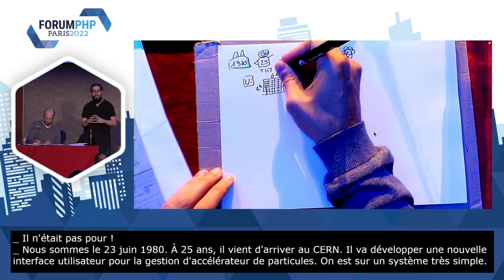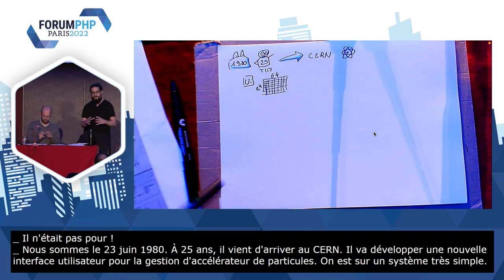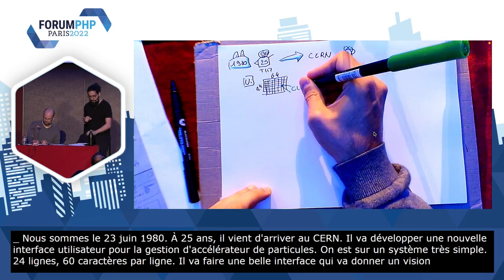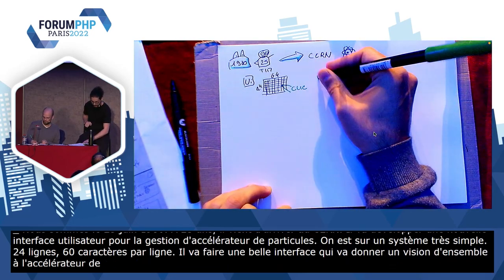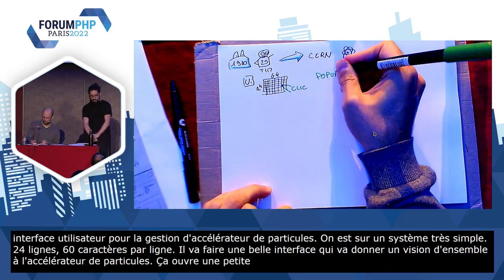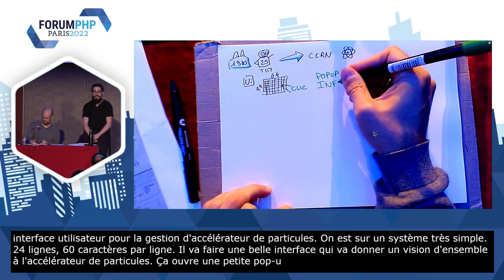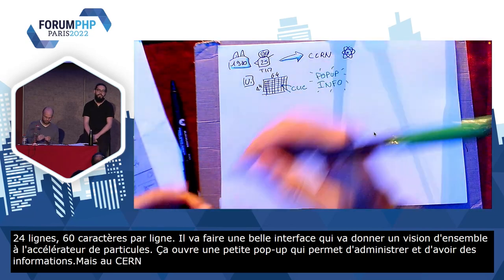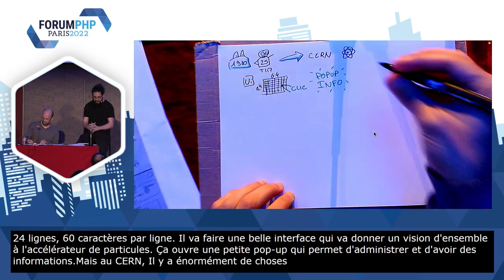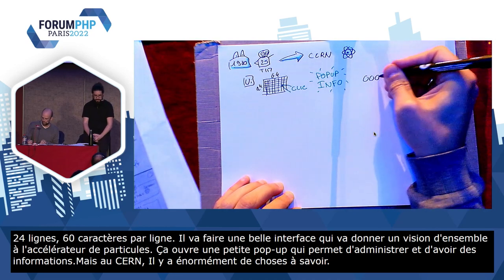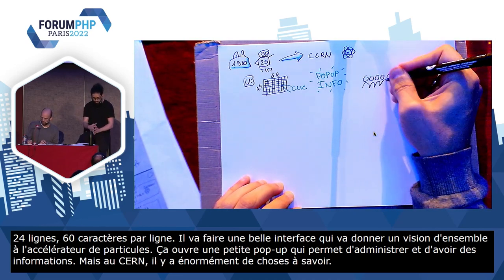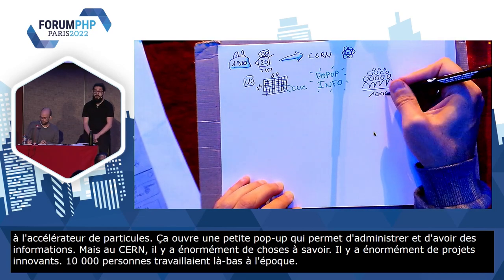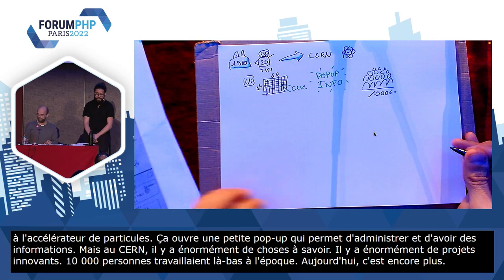Et malgré tout, il va réussir à faire une assez belle interface qui donnera une vision d'ensemble de l'accélérateur de particules. Quand on clique sur une partie, ça ouvre une petite pop-up qui permet d'administrer et d'avoir des informations. Mais le problème, c'est qu'au CERN, il y a énormément de choses à savoir. Le CERN est immense, il y a énormément de projets innovants, 10 000 personnes travaillent là-bas à l'époque. Il faut bien garder une trace de tout ça.